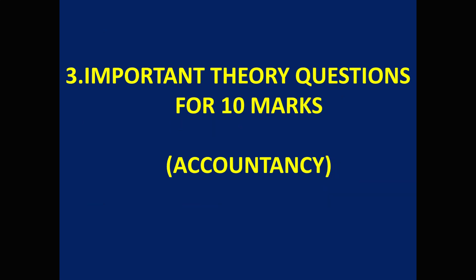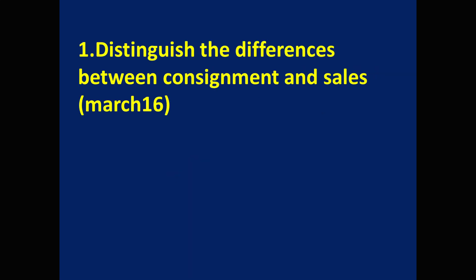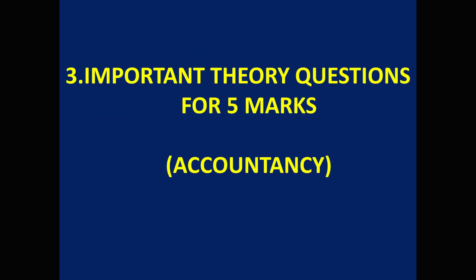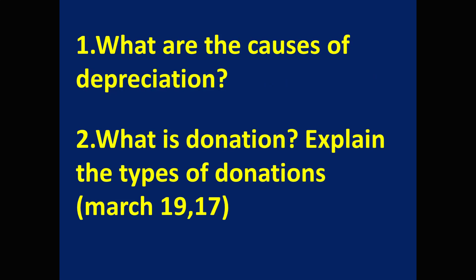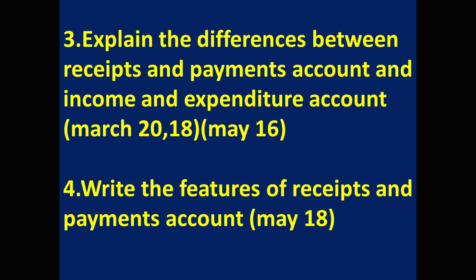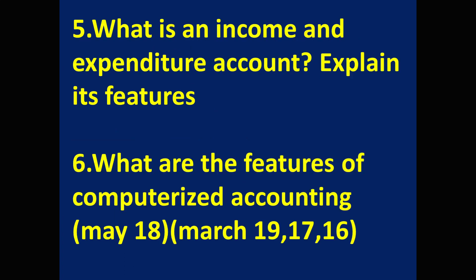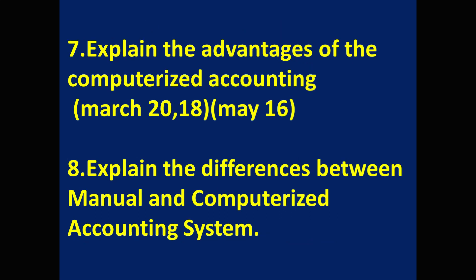Coming to the accountancy part — important theory questions. For 10 marks: distinguish the differences between consignment and sales — only one question for 10 marks. For 5 marks: first — what are the causes of depreciation; second — what is donation, explain the types of donations; third — explain the differences between receipts and payments account and income and expenditure account; fourth — write the features of receipts and payments account; fifth — what is an income and expenditure account, explain its features; sixth — what are the features of computerized accounting; seventh — explain the advantages of computerized accounting; eighth — explain the differences between manual and computerized accounting systems. With this, 10-marks and 5-marks important theory questions from accountancy part are completed.